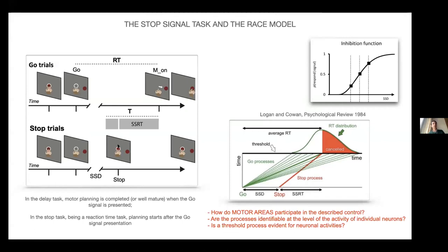The stop signal comes with a variable interval from the go signal, and in these trials animals are asked to cancel the programmed movement. Since the movement was already started as a plan after the go signal, depending on the interval between the go and the stop signal, we know that there is a nice inhibition function and the probability of success in canceling the movement depends on this stop signal delay length.